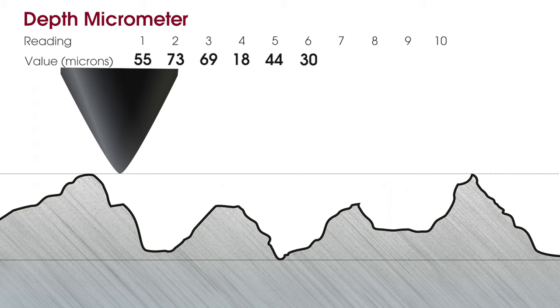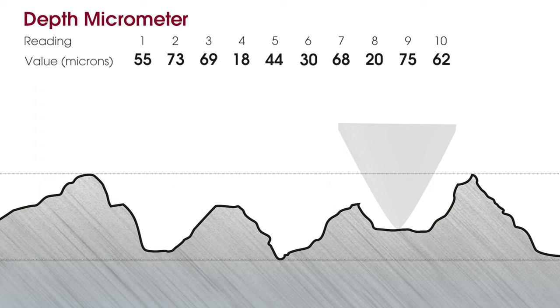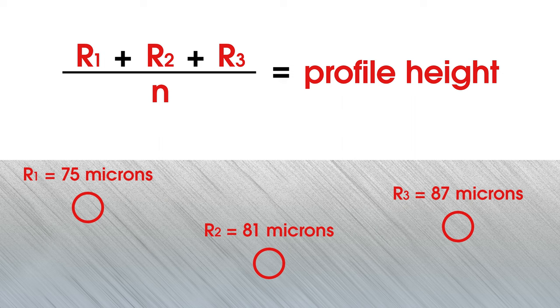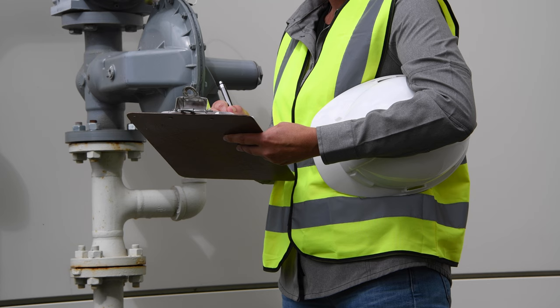ASTM D4417 recommends taking 10 readings at each location and recording only the maximum value, discarding any unusually high readings that cannot be repeated in an area. Average the maximum values at multiple locations and report it as the profile height. SSPC-PA17 recommends averaging the maximum values at a minimum of three locations to determine the profile height.